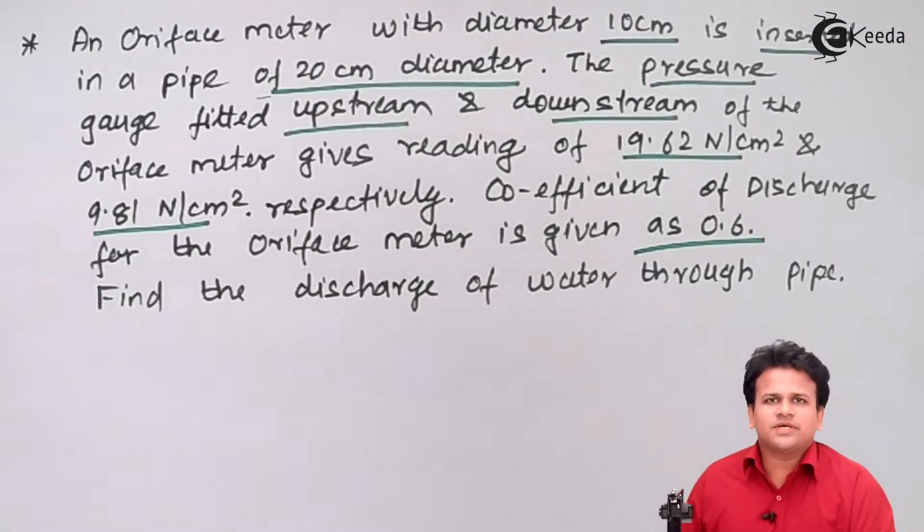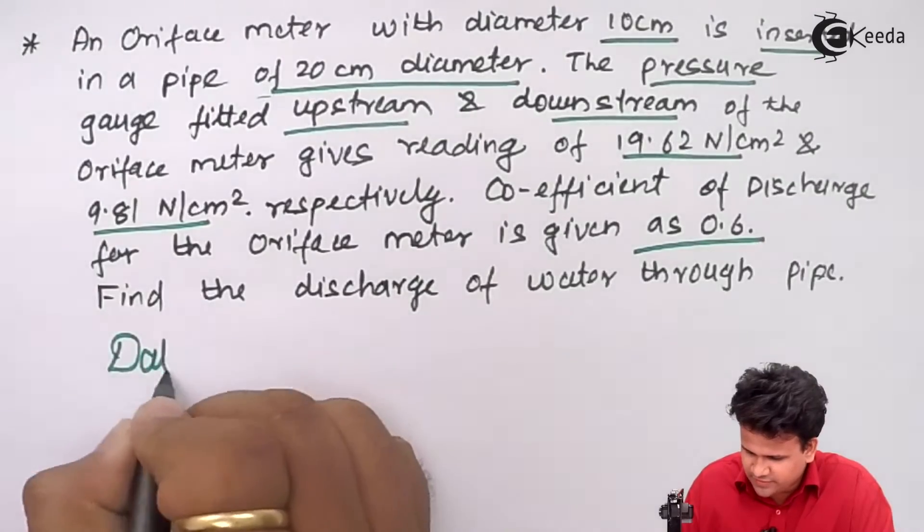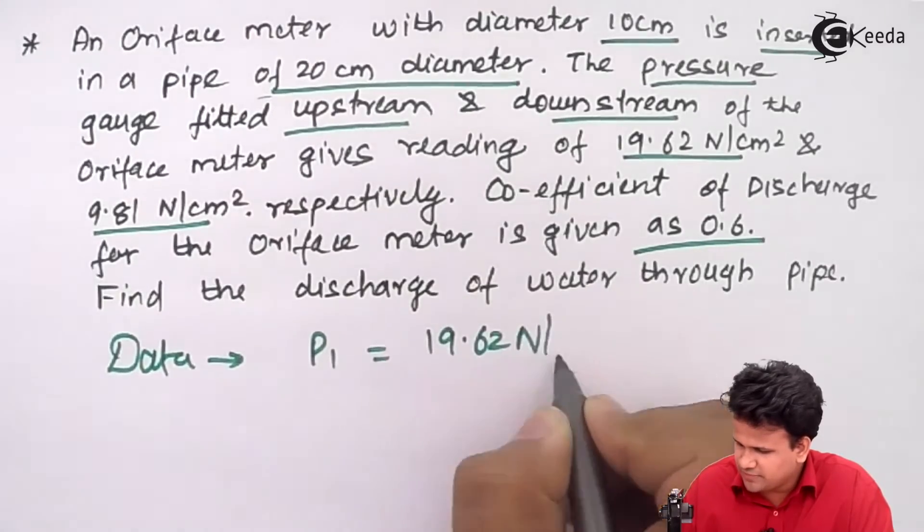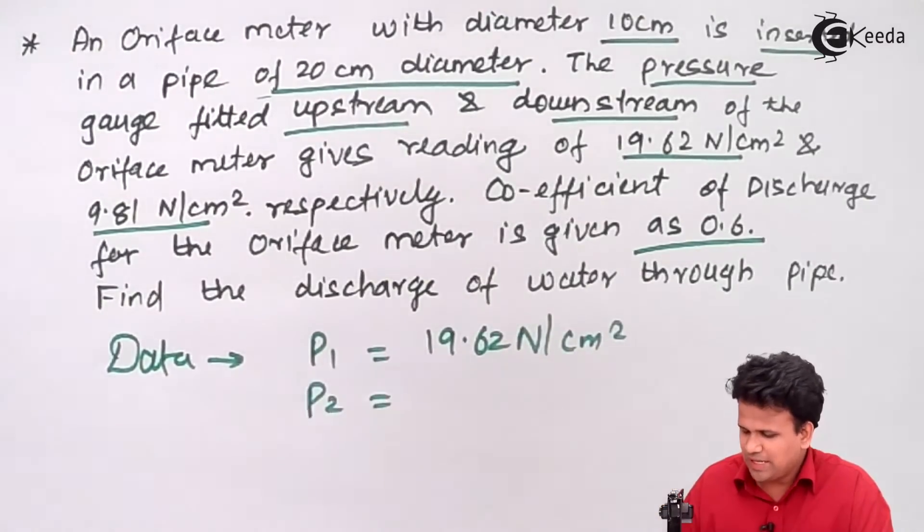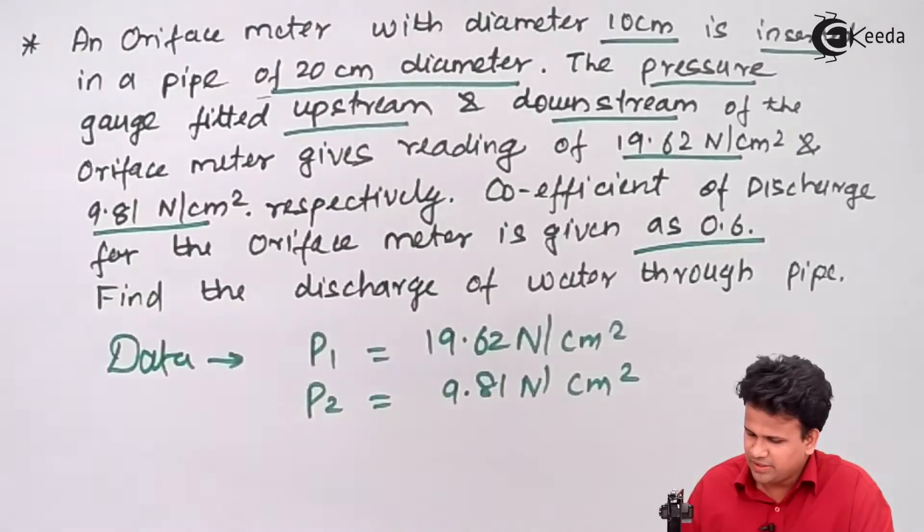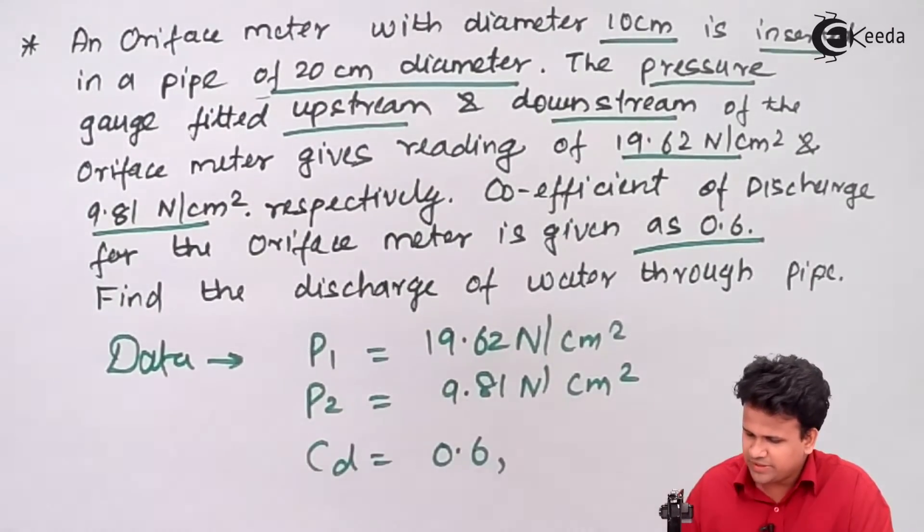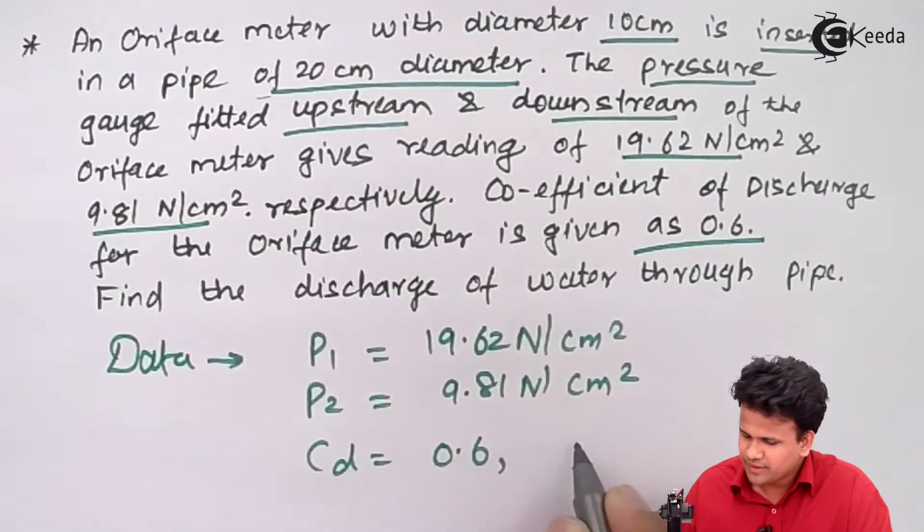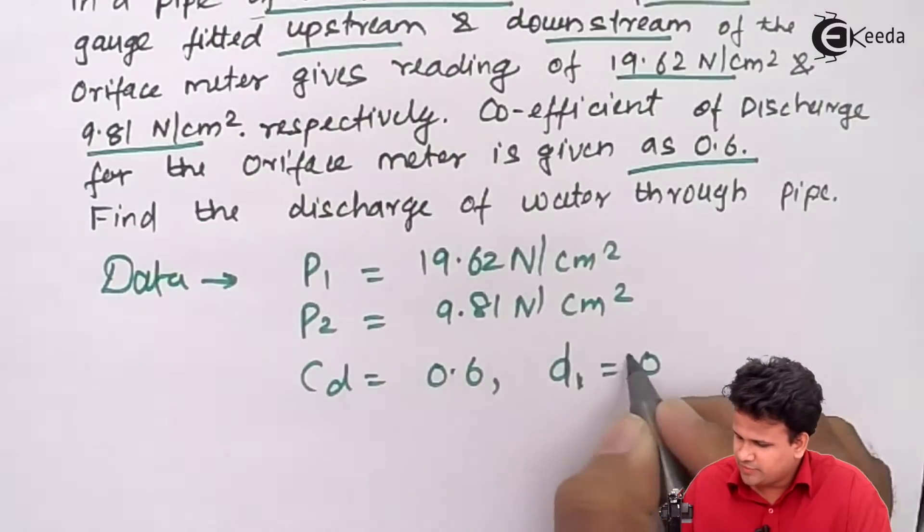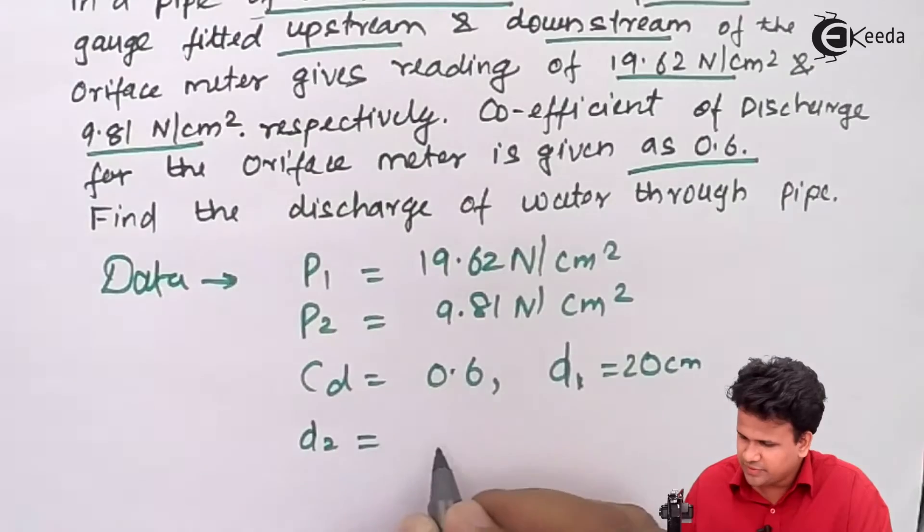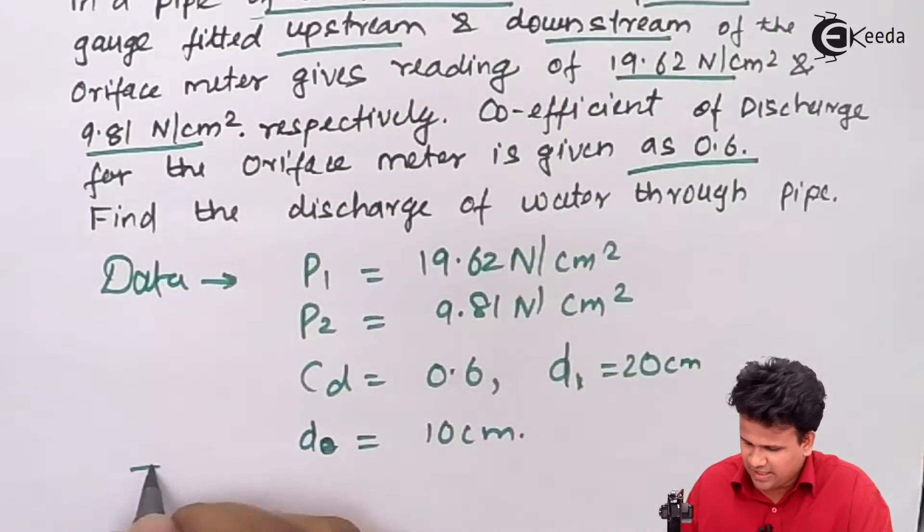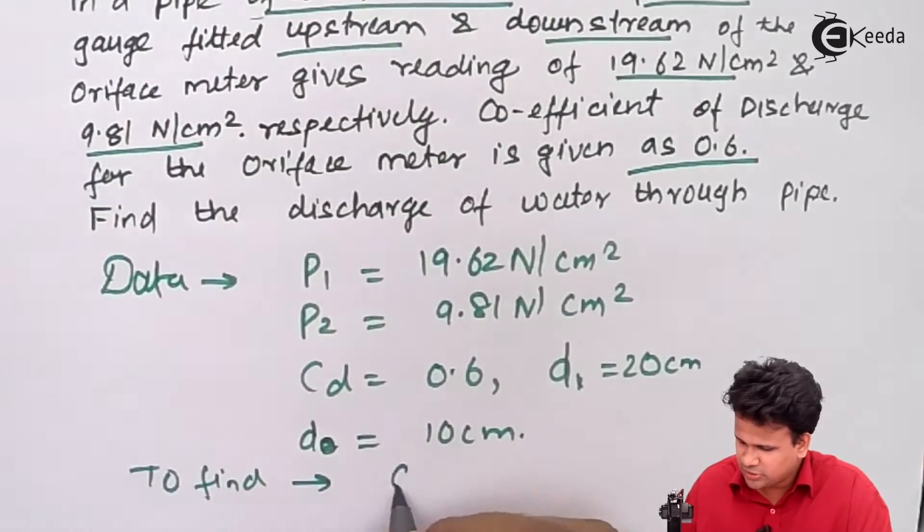Let us write down the data. The pressure p1 at the inlet is 19.62 Newton per centimeter square. Pressure p2 at the outlet is 9.81 Newton per centimeter square. The coefficient of discharge is 0.6, the inlet diameter d1 equals 20 centimeters and orifice diameter d0 is 10 centimeters. We have to find q.